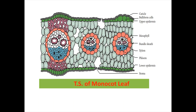Transverse section of monocot leaf: both epidermal cells contain stomata and a thick cuticle is present in both epidermis. Upper epidermis cells are larger in size and are called bulliform or motor cells. Mesophyll cells are arranged compactly. The vascular bundles are closely arranged and surrounded by a bundle sheath.